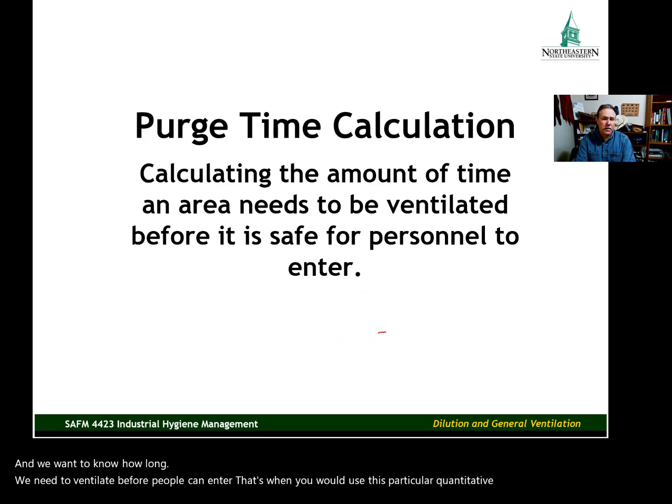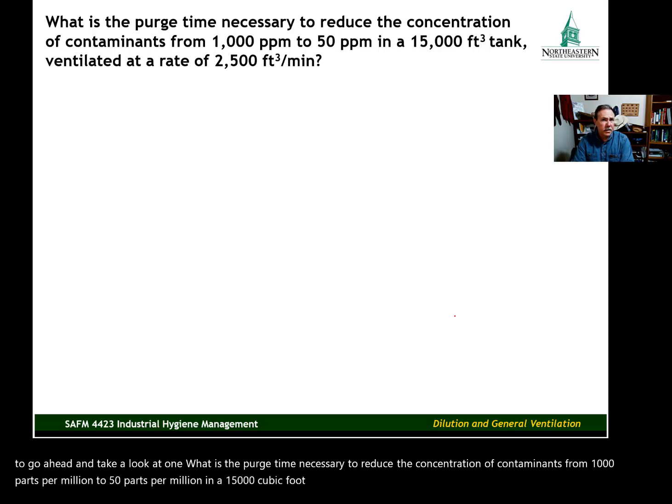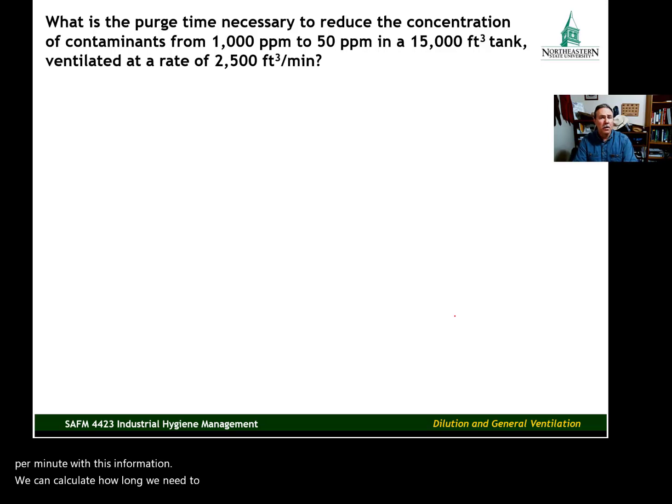Here's a problem to take a look at. What is the purge time necessary to reduce the concentration of contaminants from 1,000 parts per million to 50 parts per million in a 15,000 cubic foot tank, and the tank is being ventilated at a rate of 2,500 cubic feet per minute? With this information we can calculate how long we need to ventilate before people can enter, before it gets down to that 50 parts per million desired concentration.